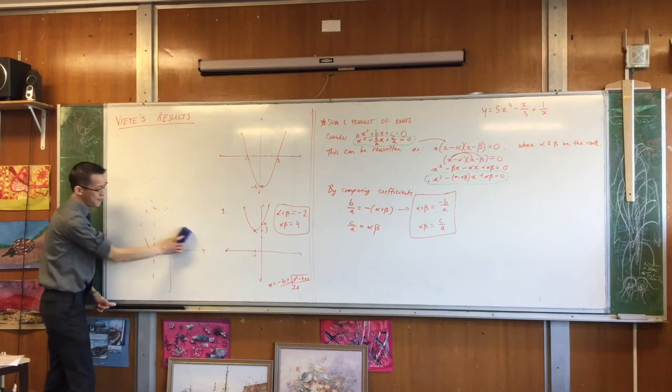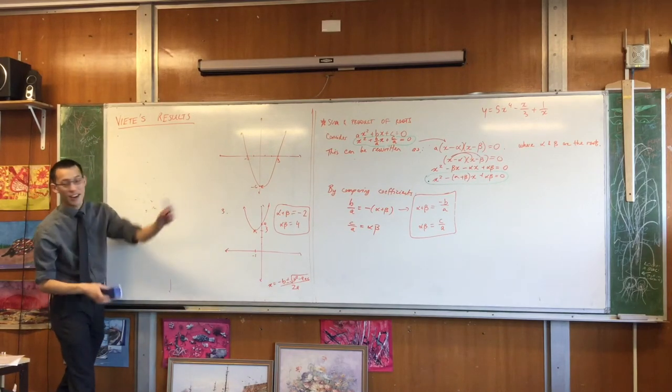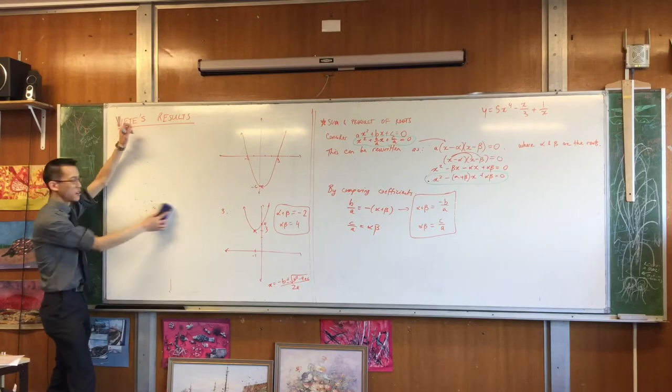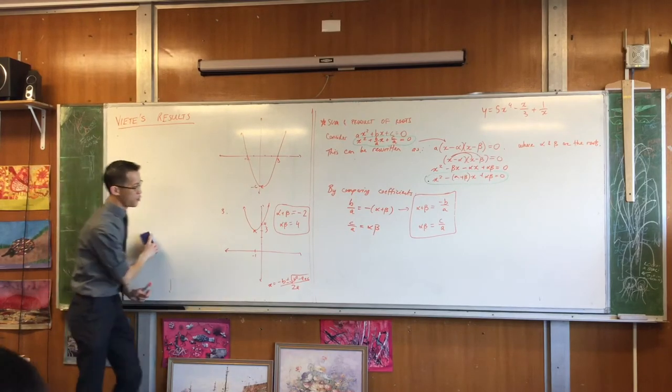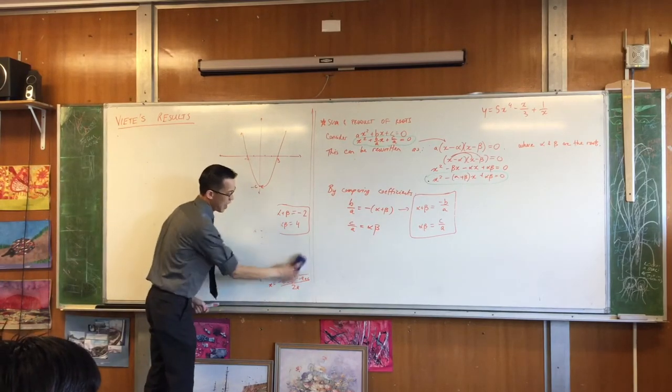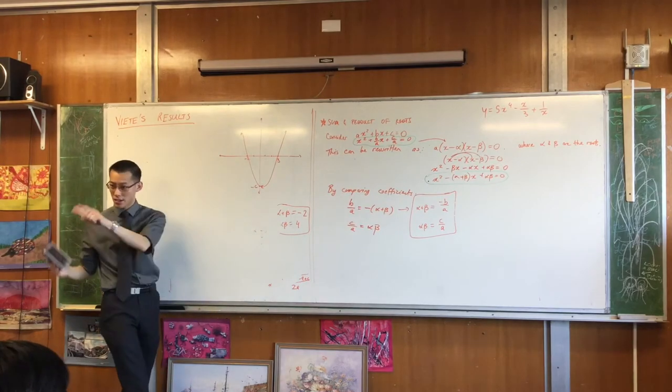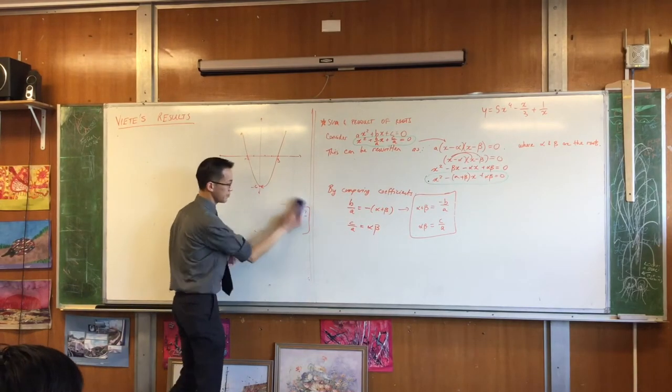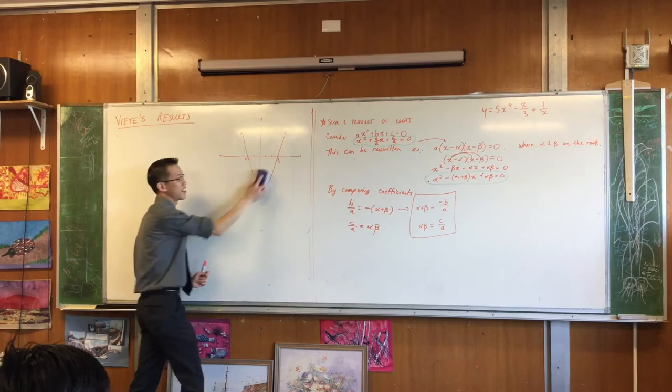These are alpha plus beta and alpha beta. Those things I should have put in a box are called Vieta's results. He's a French mathematician who came up with this, and we're going to use Vieta's results to answer this question along with some of the factorization stuff we looked at last week.